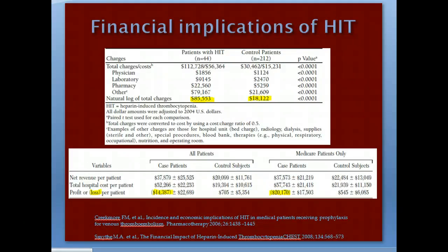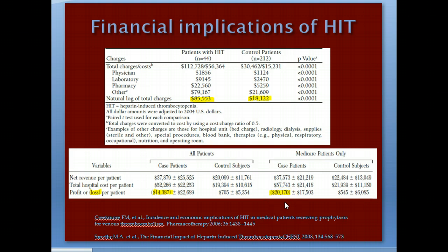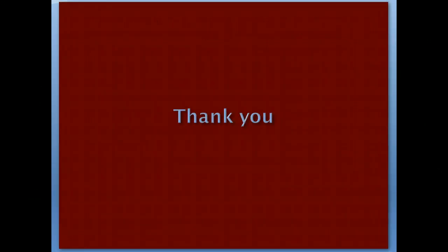Financial impact of HIT: a study from the University of Utah found the cost of treating a HIT patient in hospital is $85,000 compared to $20,000 for a similar patient without HIT. A study from William Beaumont Hospital in Michigan found a net loss of $15,000 per HIT patient, or $20,000 for Medicare patients — meaning treating 50 HIT patients per year results in a million-dollar loss. With that, we come to the end of this lecture. Thank you for listening.